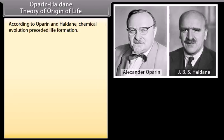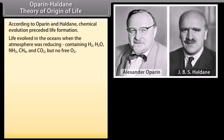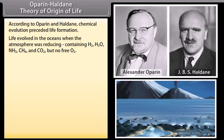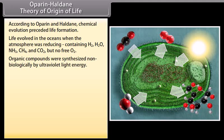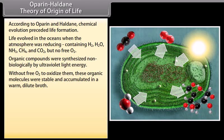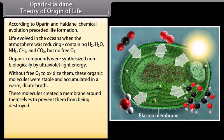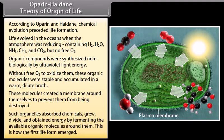Oparin-Haldane Theory of Origin of Life: According to Oparin and Haldane, chemical evolution preceded life formation. Life evolved in the oceans when the atmosphere was reducing, containing H2, H2O, NH3, CH4 and CO2 but no free O2. Organic compounds were synthesized non-biologically by ultraviolet light energy. Without free O2 to oxidize them, these organic molecules were stable and accumulated in a warm dilute broth. These molecules created a membrane around themselves to prevent destruction. Such organelles absorbed chemicals, grew, divided and obtained energy by fermenting available organic molecules — this is how the first life form emerged.